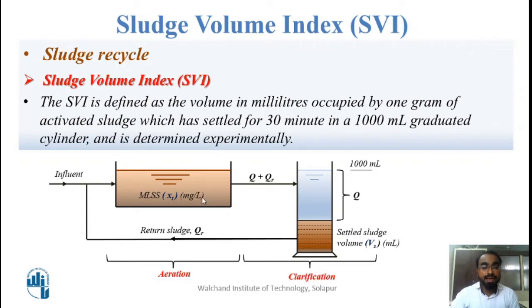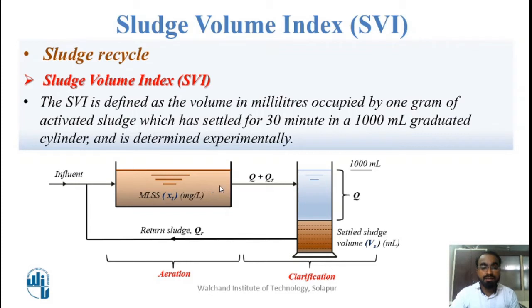We focus on the sludge settled in 30 minutes. For 1 gram of activated sludge that has settled, we calculate its volume to determine how much activated sludge has been generated and how much concentration needs to be added into the influent. For that, we must understand the concentration of microorganisms in that sludge — the important parameter here is MLSS in the biological reactor, that is XT. The MLSS, measured in mg per liter, is degraded slowly by microorganisms and transferred to the secondary clarifier, where only a portion remains. The two key parameters are MLSS in the biological reactor and the settled volume of sludge in the secondary clarifier.